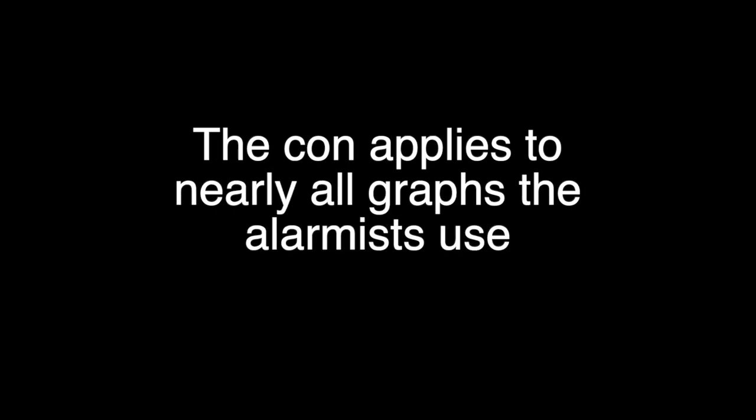The way climate alarmists intentionally deceive you is by changing the starting date of their graphs so as to suit their agenda. I'll explain. This applies to almost everything the alarmists do, but we'll start with one example: Arctic sea ice.